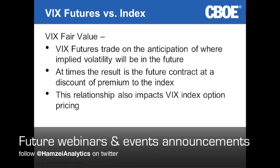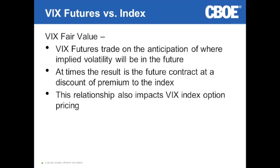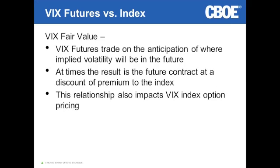Sometimes the futures contracts are at a premium, based on the market's anticipation for implied volatility going forward. And sometimes we'll see the futures contract at a discount — very often when coming out of a high-volatility period. We've experienced one of these periods recently where the VIX futures have, for the most part, been at a discount to the index. The index has been at an elevated level relative to history, and there's an anticipation that, because implied volatility does revert to the mean over time, the VIX index is going to come down — and the VIX futures are already pricing that in.